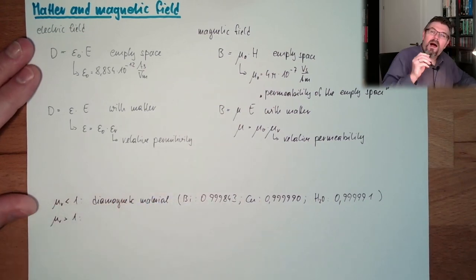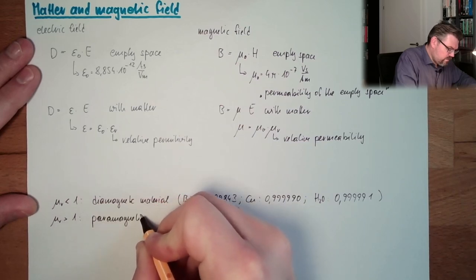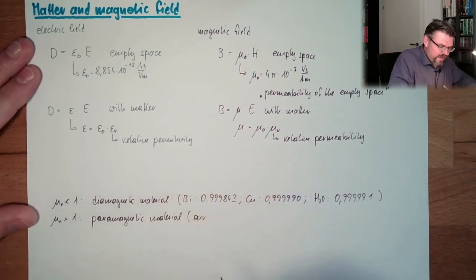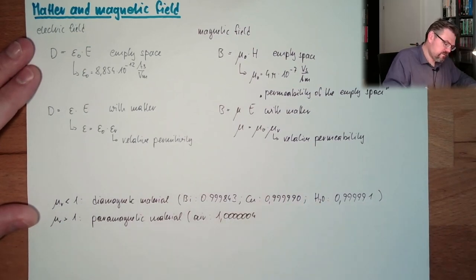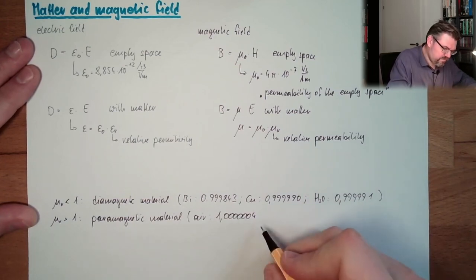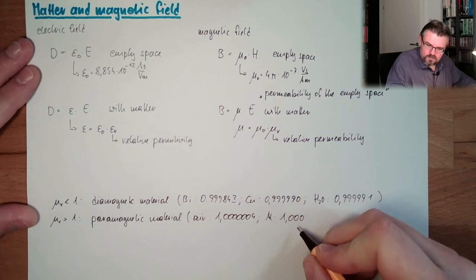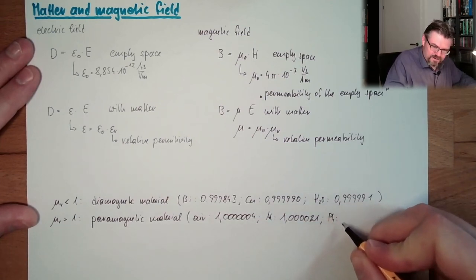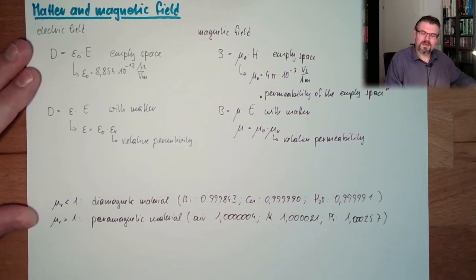If μᵣ is bigger than one, we have paramagnetic material. For instance, air has μᵣ = 1.000000... with six zeros after the decimal — it behaves like empty space. You can measure the difference, but it's really almost nothing. Aluminium and platinum are also paramagnetic examples. So both diamagnetic and paramagnetic materials are never far off from one.